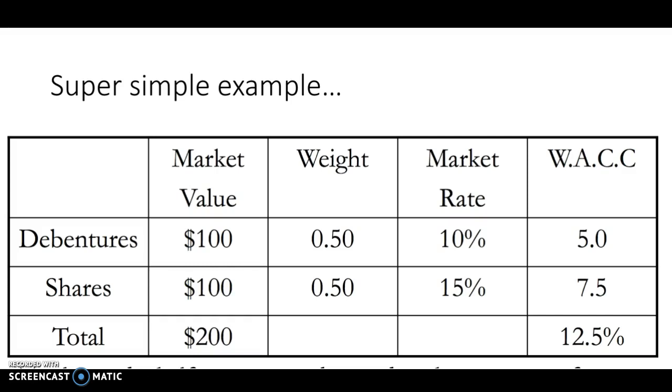For a super simple example, say we've got $100 worth of debentures or bonds and $100 worth of shares, so we have $200 worth of capital. It's a weight ratio of 50-50. We've got a market rate of 10% on the debentures and 15% on the shares. So the weighted cost of capital is 10% of 100 is $10, 50% of that is $5, 15% of $100 is $15, 50% of that is $7.50, and so we've got 12.5% there.